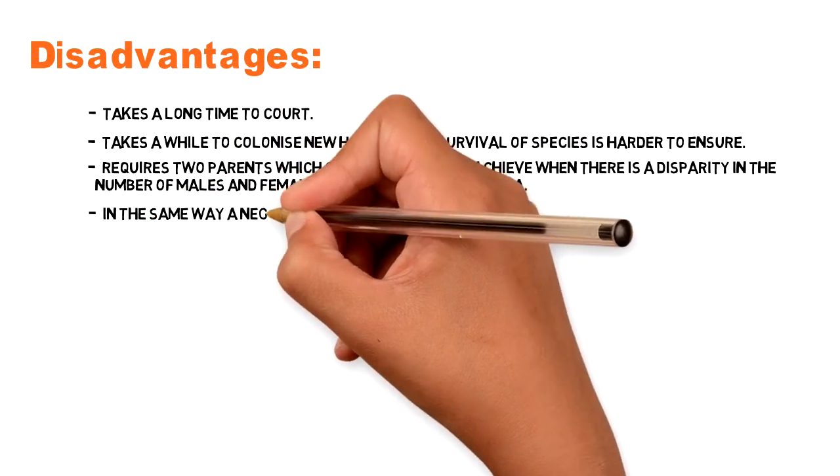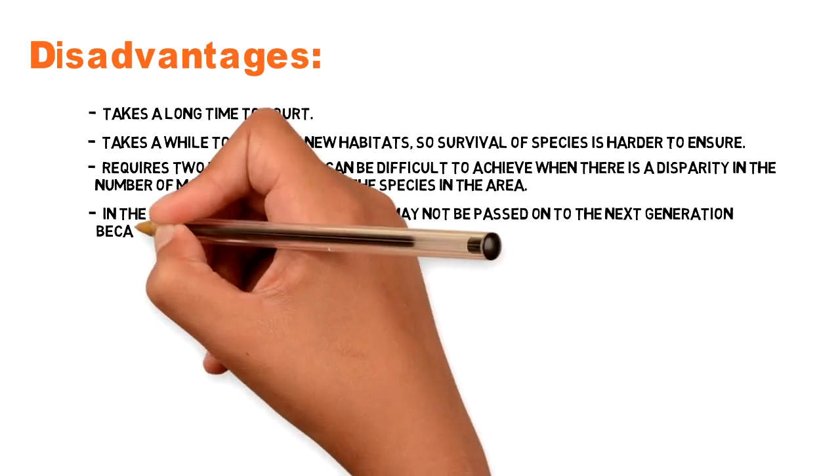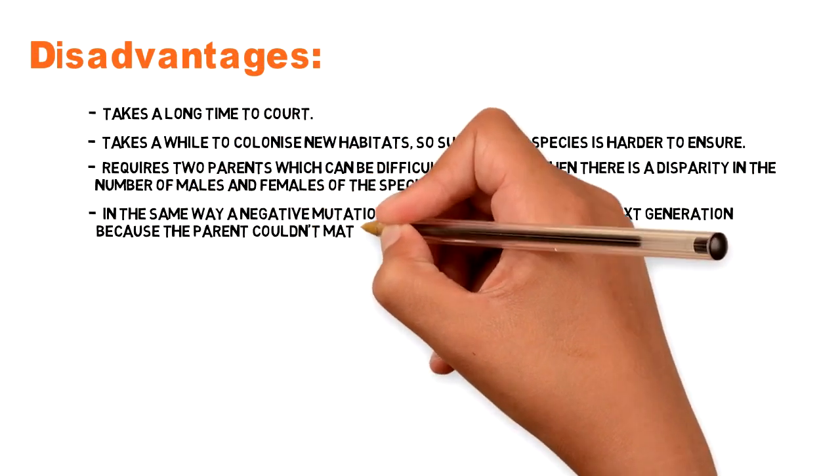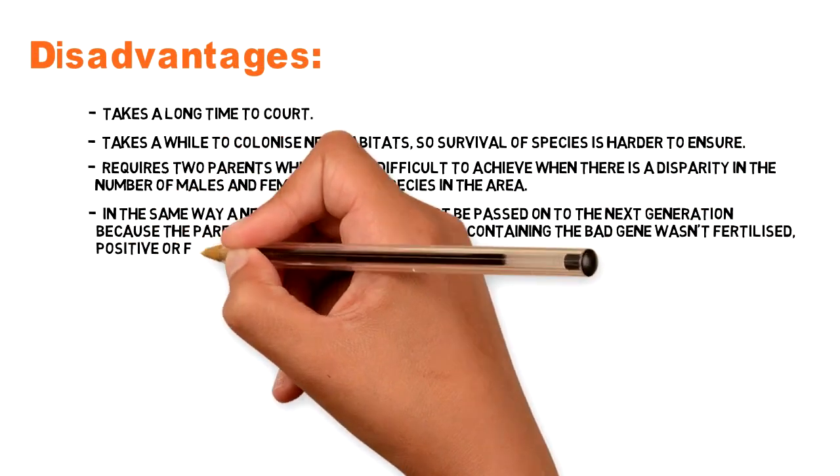In the same way, a negative mutation may not be passed on to the next generation because the parent couldn't mate, or the gamete containing the bad gene wasn't fertilised, positive or favourable genes may not be passed on.